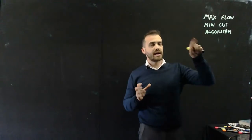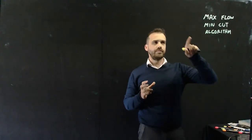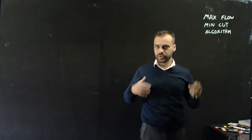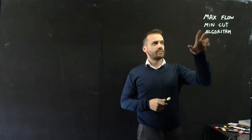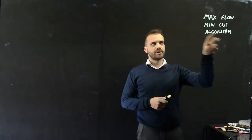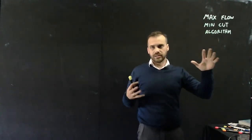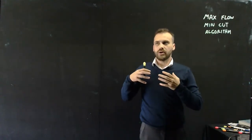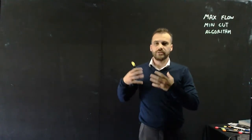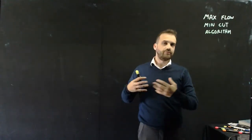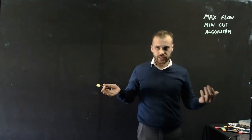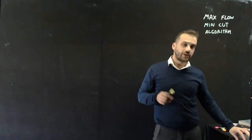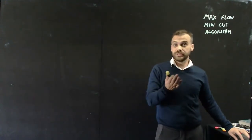In this video we're doing the maximum flow minimum cut algorithm — a series of steps. We're going to use something called a minimum cut to tell us what the maximum flow of a weighted directed flow network is. So first of all, let's look at a network and figure out what a cut is.